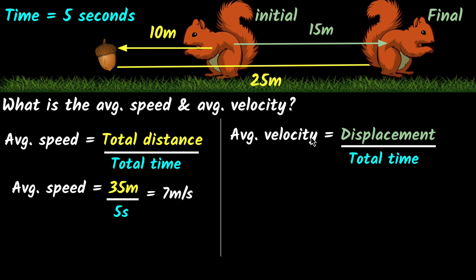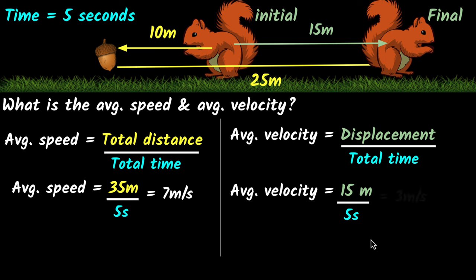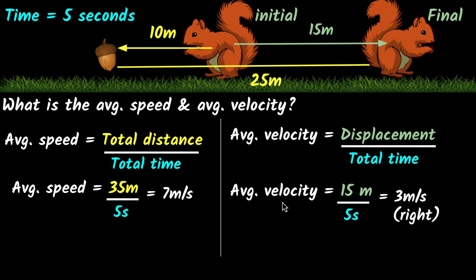Now that we know the displacement, we can calculate average velocity: 15 meters displacement divided by five seconds equals three meters per second. Remember, the squirrel did not travel directly 15 meters — it traveled back and forth. But for average velocity, we only care about how much it changed its location, which is 15 meters to the right. Since displacement involves direction, we must mention it. So the squirrel's average velocity is three meters per second to the right.